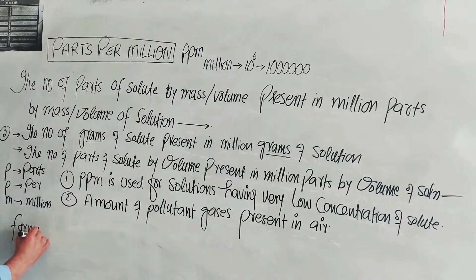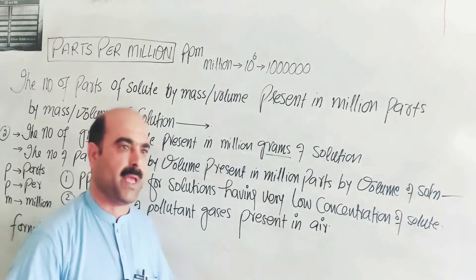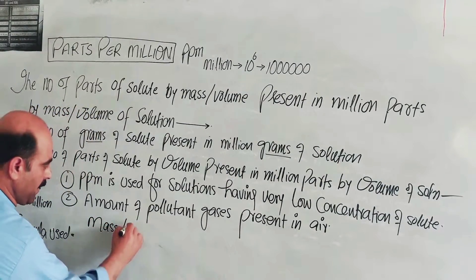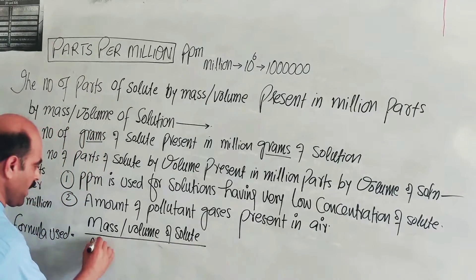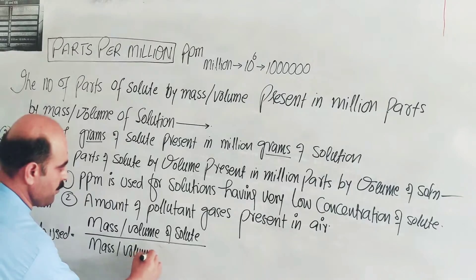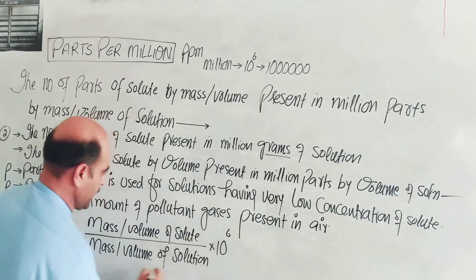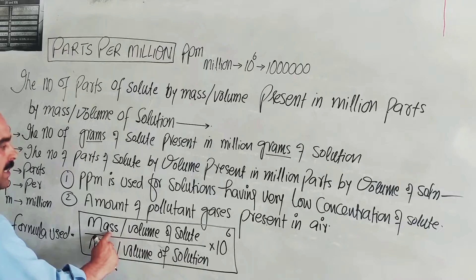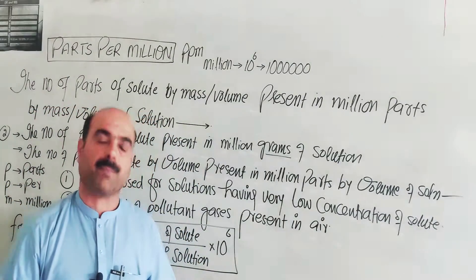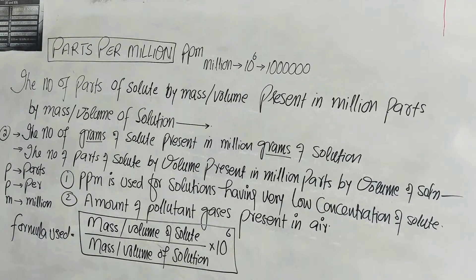The formula used for PPM: PPM equals mass or volume of solute divided by mass or volume of solution, multiplied by 10 raised to the power of 6. This gives mass per million mass, or volume per million volume. Students should note this formula clearly.